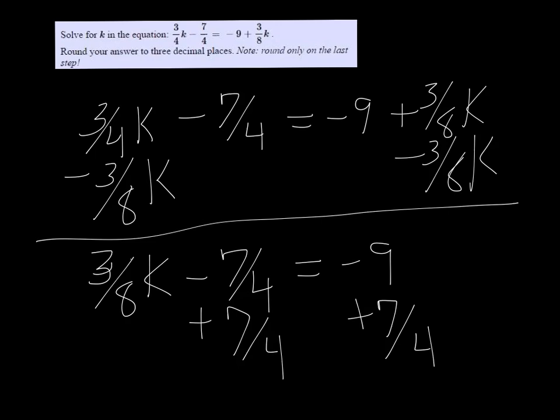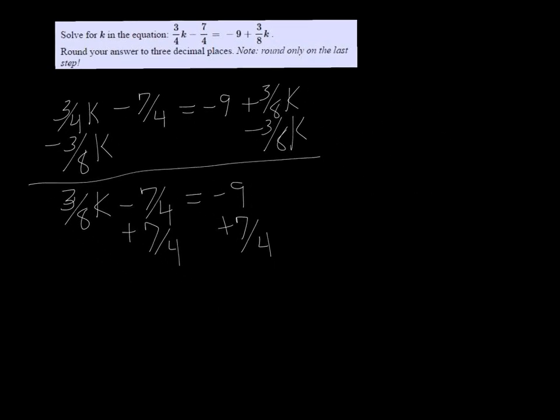So -9 plus 7/4 is -29/4. So we have 3/8k equals -29/4.